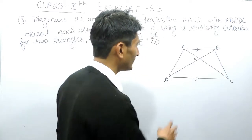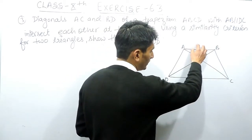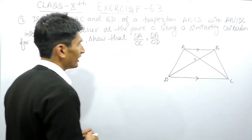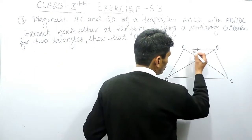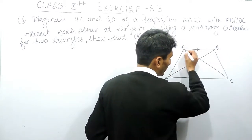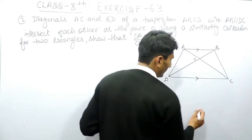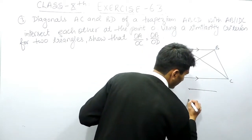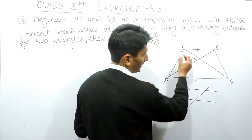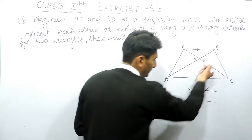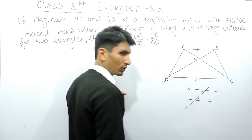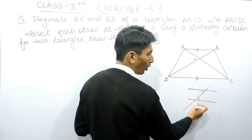You just need to prove that two angles of this triangle are equal to two angles of the other triangle. For that, we use the property of parallel lines. If AB and DC are parallel and BD is a transversal, then this angle and this angle must be equal — these are known as alternate angles.